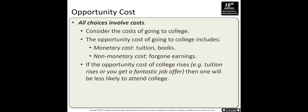Because it might be too much to work full-time and also go to college, the foregone earnings of a full-time job is another opportunity cost. It's non-monetary because you're not paying for it, but foregone earnings is also an opportunity cost. So opportunity cost is the sum of monetary plus non-monetary costs.